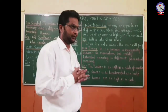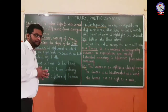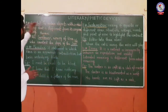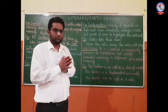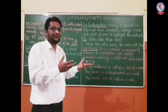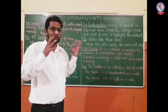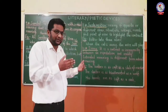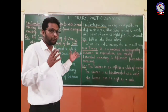The ninth poetic device is symbol or symbolism. A symbol is used to imbue objects with a certain meaning that is different from their original meaning. It is a literary device used to instill a particular meaning to any object, where the meaning given may differ from the actual or original meaning of that object.